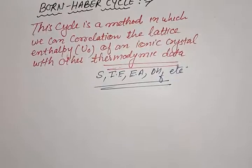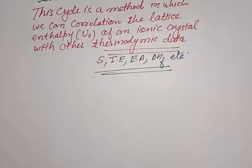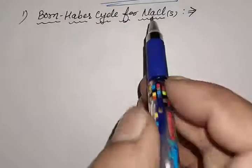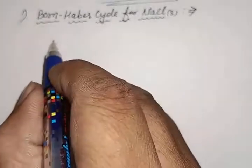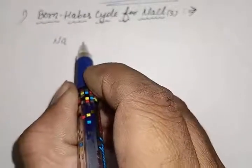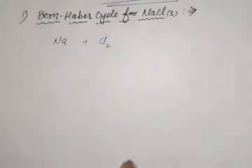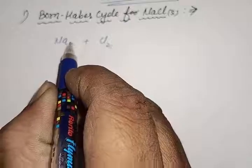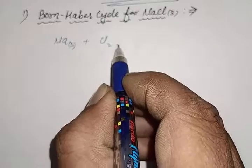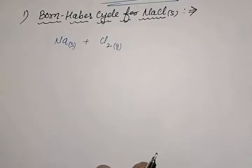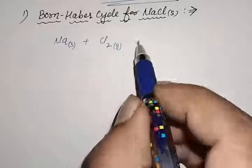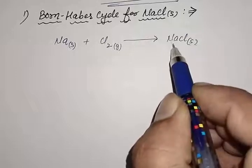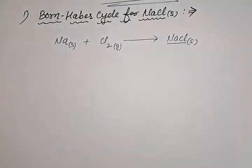So let's start the Born-Haber Cycle for sodium chloride. As we know that sodium chloride can be prepared from sodium metal and chlorine gas. In natural conditions, sodium metal is present as a solid and chlorine is present as a gas. By using these two constituent particles, we can prepare one mole of sodium chloride solid.